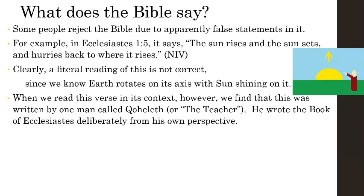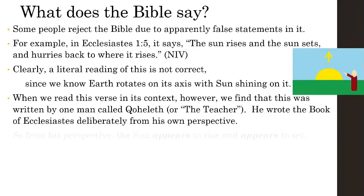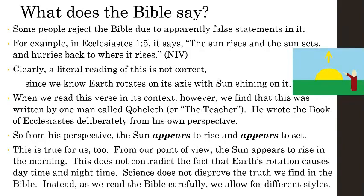When we read through this verse in context, we find that it was written by a man called Koheleth, or simply 'the teacher.' He wrote the book of Ecclesiastes deliberately from his own perspective. So from his perspective, the Sun appears to rise and appears to set — and this is true for us too. From our point of view, the Sun appears to rise in the morning. This does not contradict the fact that Earth's rotation causes daytime and nighttime. Science does not disprove the truth we find in the Bible. Instead, as we read the Bible carefully and allow for different styles, genres, and perspectives, we see that science and the Bible actually match together.